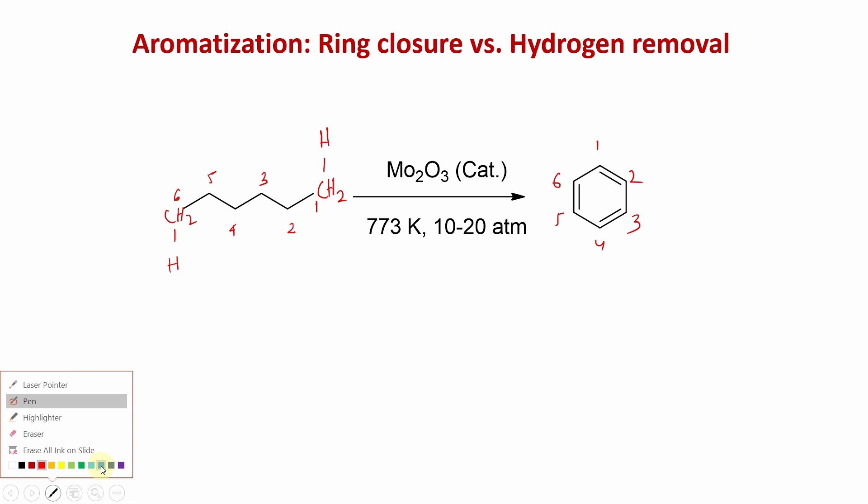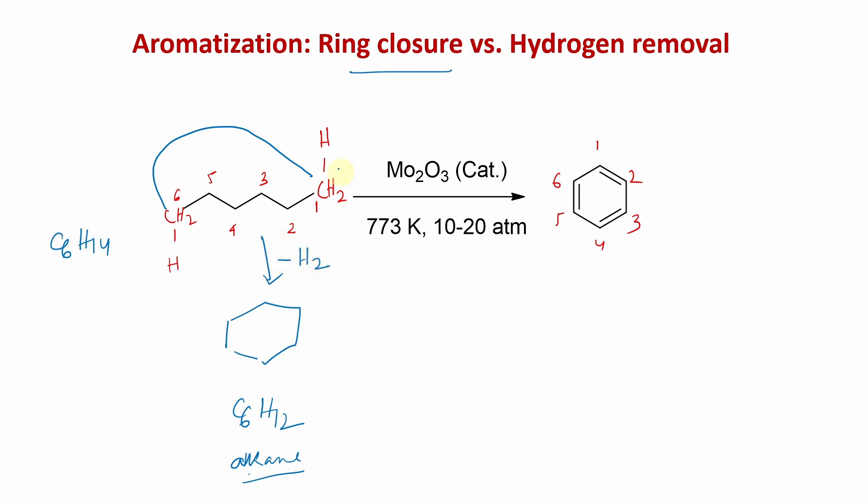If you look at hexane, carbon 1, 2, 3, 4, 5, 6. In this context, counting is very special. If I want to make a 6-member ring, I should connect these two ends. So these connections need to be made. If I make this connection, it is cyclohexane, C6H12. The first step is ring closure or cyclization.